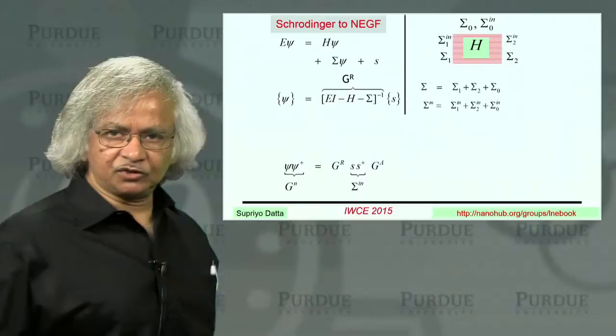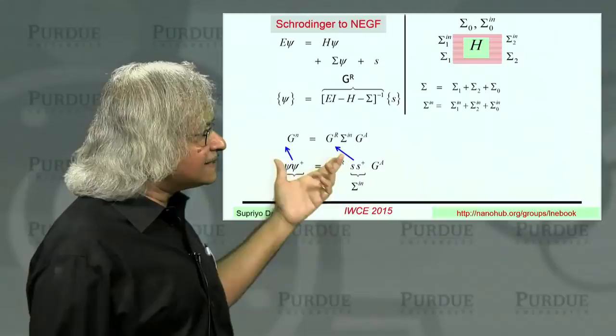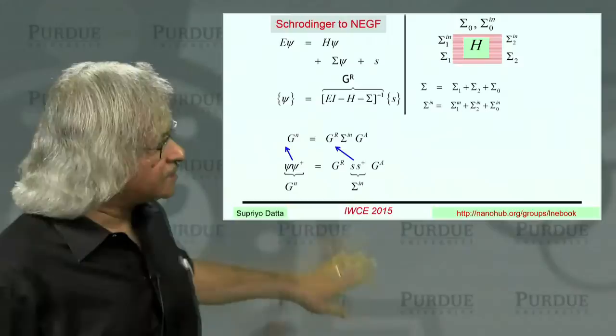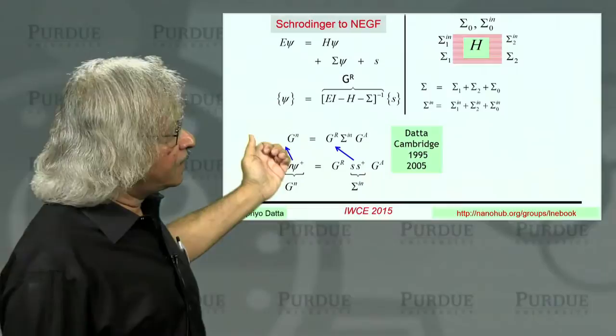And the psi-psi-star, that's Gn, Ss-star, that's the strength of the source term, that's sigma-n. And this is the non-equilibrium Green's function equation. See? So you can see this derivation is literally one line, getting from here to here. And this is how I have done it in my books in the past.